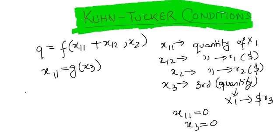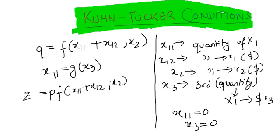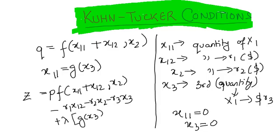It is also assumed that x11 equals 0 which implies x3 equals 0. Now the appropriate Lagrange function for profit maximization can be written as z equals p·f(x11 plus x12, x2) minus r1·x12 minus r2·x2 minus r3·x3. Now we'll take the Lagrange multiplier as lambda, which is g(x3) minus x11, and this is the whole profit maximization Lagrangian function.